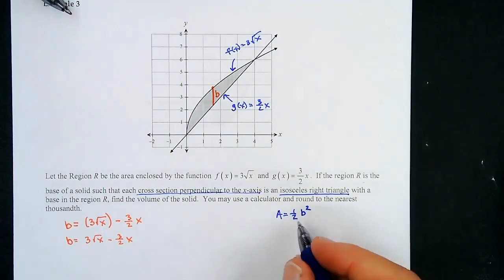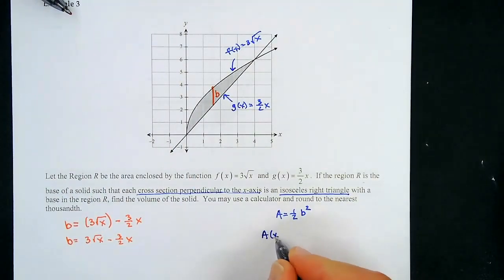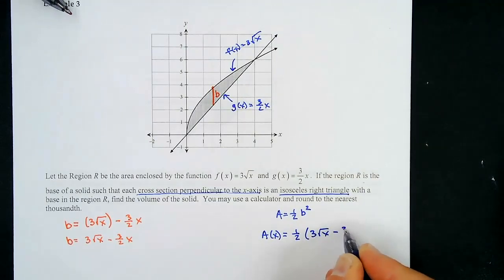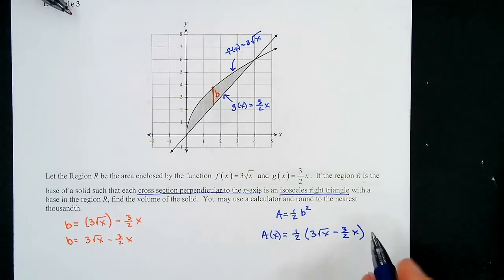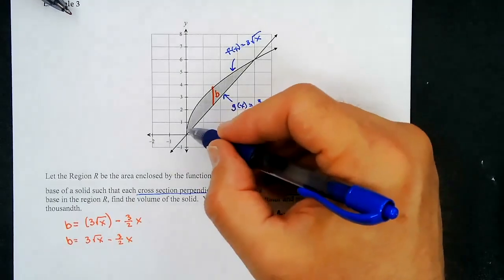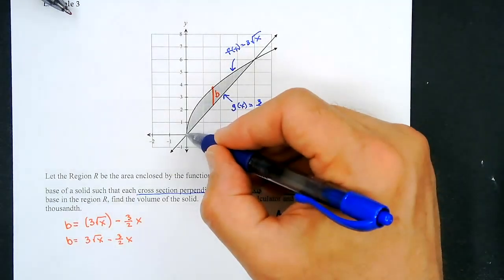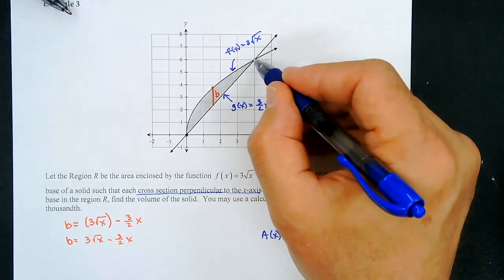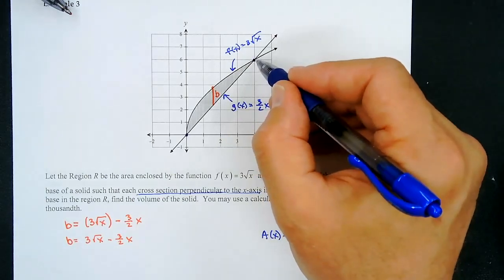The area function A(x) = (1/2)(3√x − (3/2)x)². Now we need to find the intersection points. It looks like x = 0 and x = 4 from the graph, but we need to verify by solving 3√x = (3/2)x.